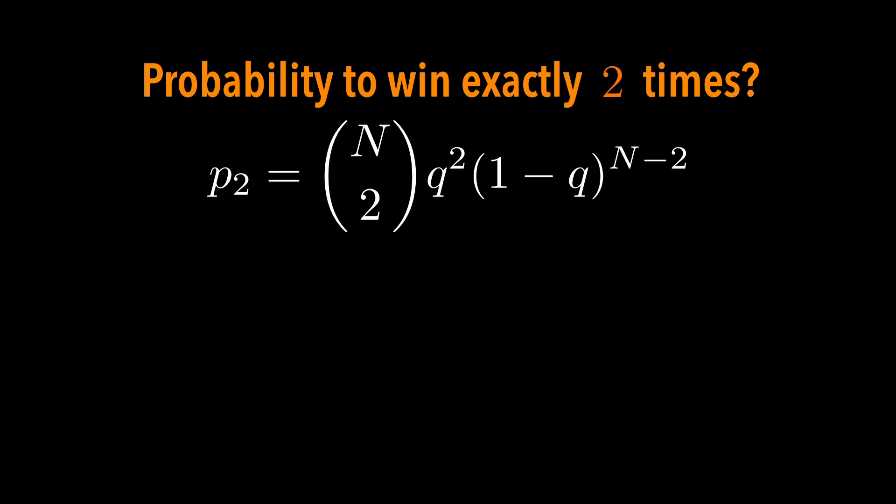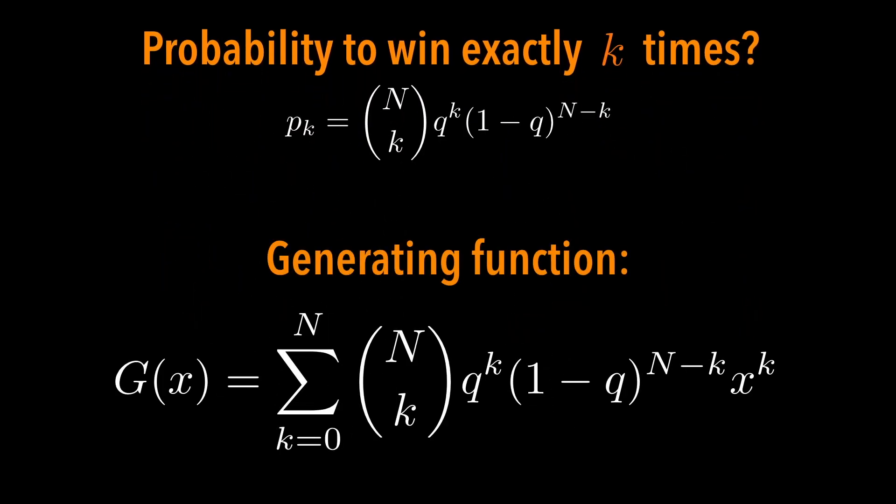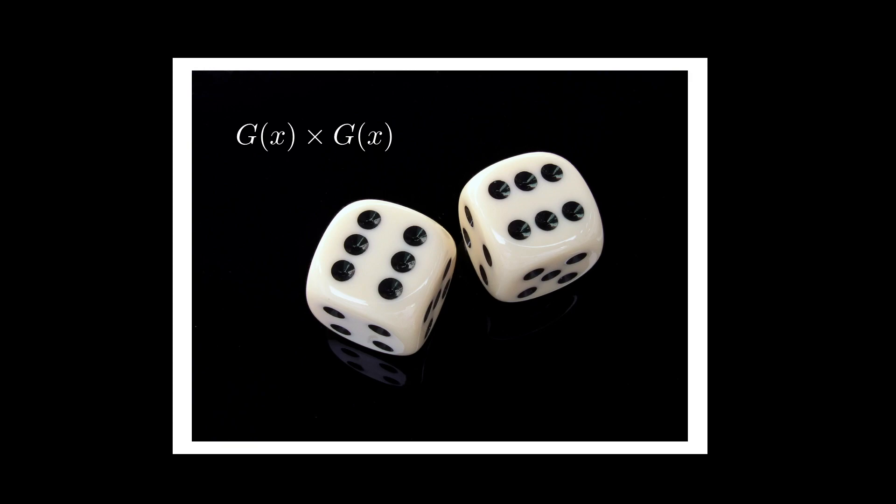And given this probability for each k, you can write a generating function. That's it, right? Well, actually there is another interesting way. Do you recall the product property of the generating functions from the last video? It tells you that if you multiply two generating functions together, we get a new generating function that captures the probability of the sum of the values. If g(x) is a generating function for a dice, then g(x) squared is a generating function for the sum of the eyes from two independent rolls of the same dice.